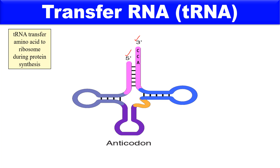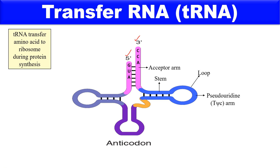In the tRNA structure, the linear portions of the arms are called stems and the rounded portions are called loops. The first arm is the acceptor arm, which has the amino acid binding site and consists of three unpaired and seven paired nitrogenous bases. The second arm is the pseudouridine arm, which is responsible for the attachment of tRNA to the ribosome during protein synthesis.